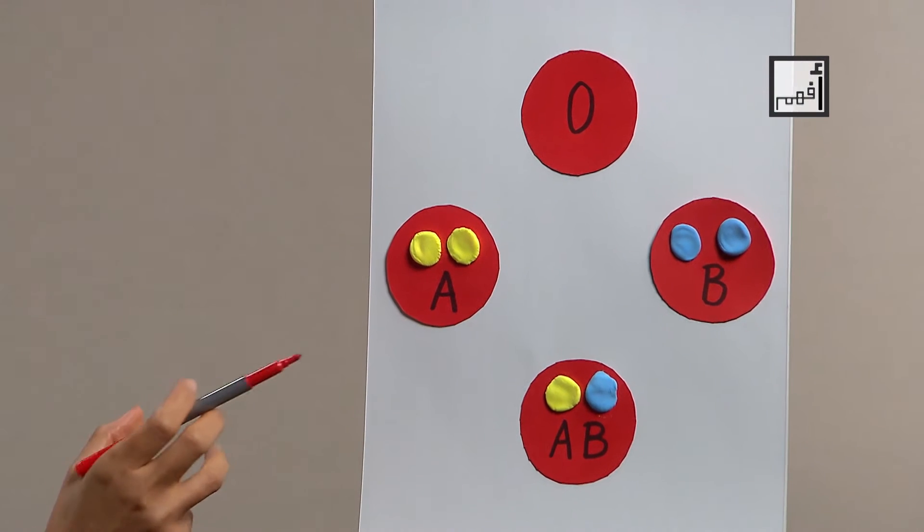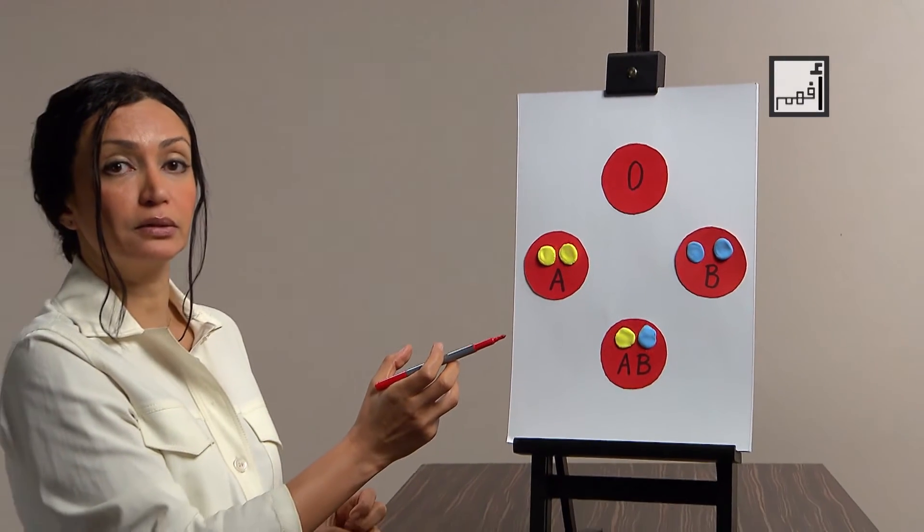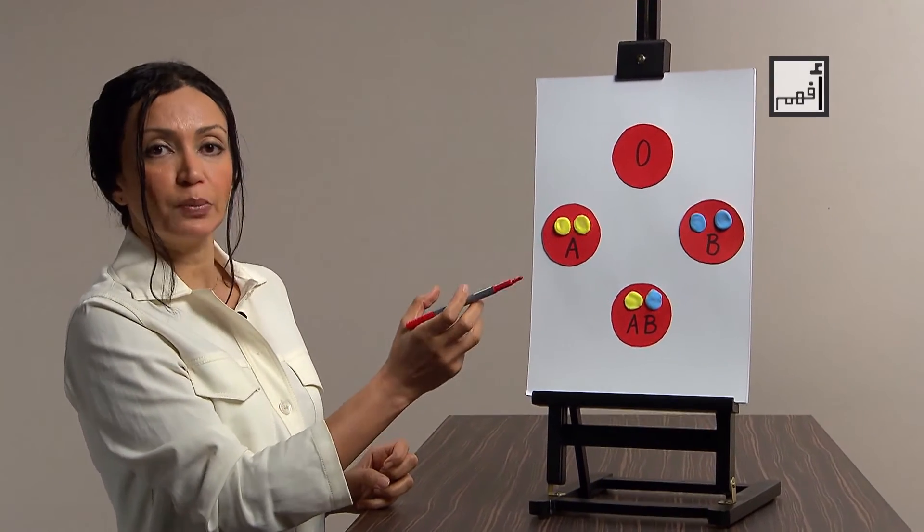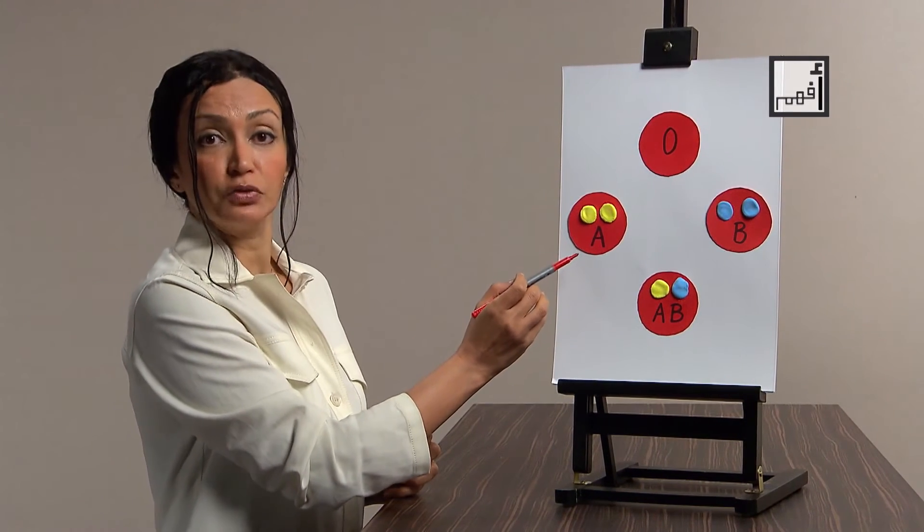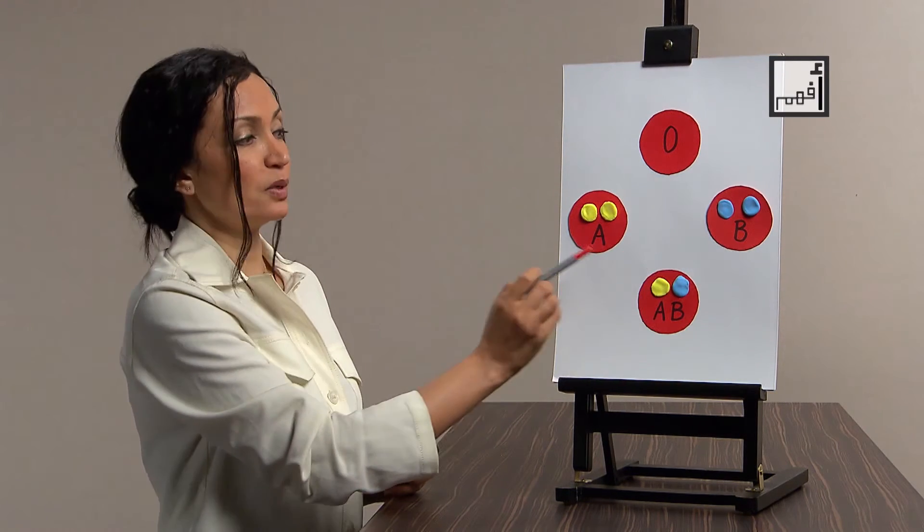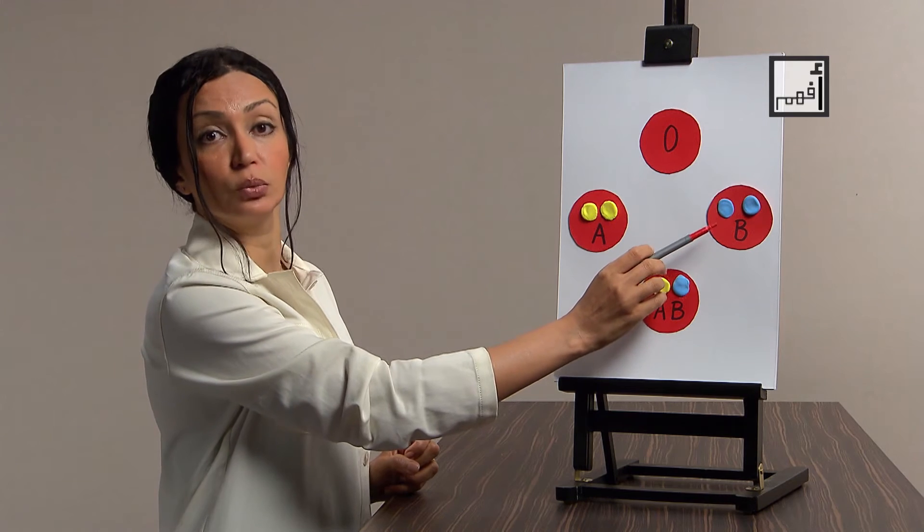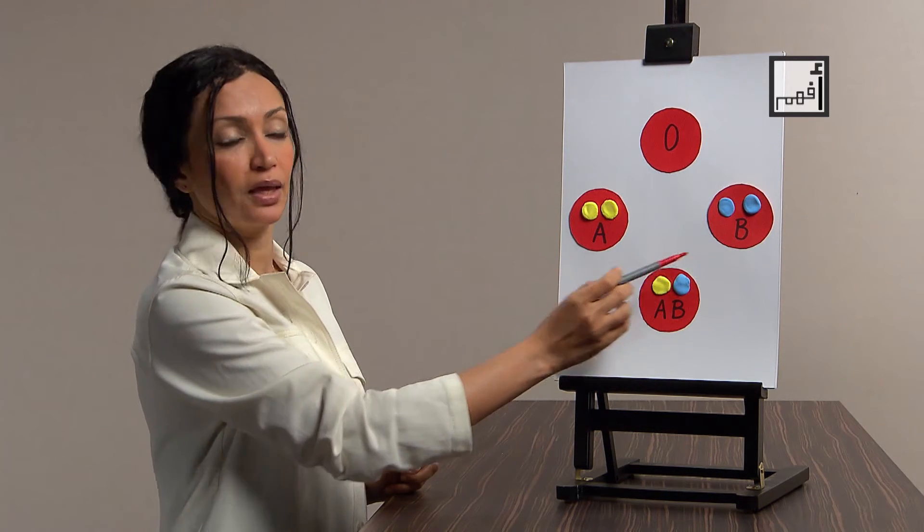So if you are group A, group B will be foreign for you. And the same if you are group B, group A will be foreign to you. If you are from group A and received blood from group B, your body will recognize it as foreign bodies and will react against the protein B.